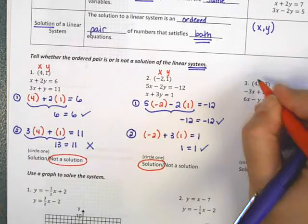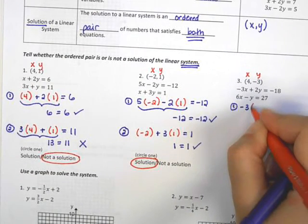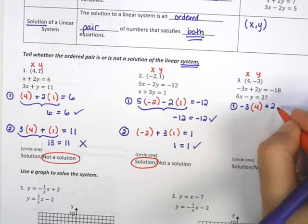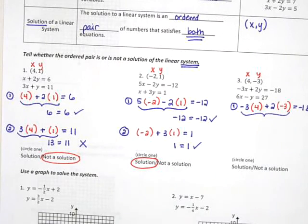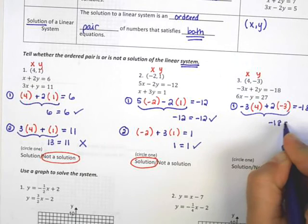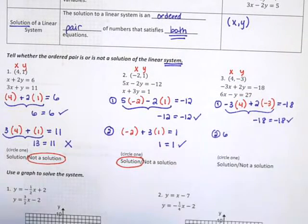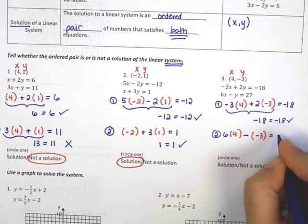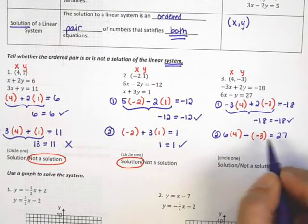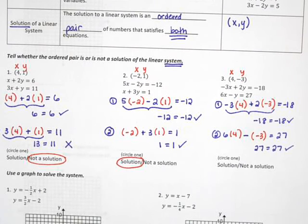In example three, I'm going to try x equals four and y equals negative three in the first equation: negative three times four plus two times negative three equals negative eighteen. Negative twelve minus six is negative eighteen, which checks out. Now checking the second equation: six times four minus negative three equals twenty-seven. Six times four is twenty-four, plus three — because two minuses make a plus — gives twenty-seven equals twenty-seven. Since it works for both equations, the answer is solution.